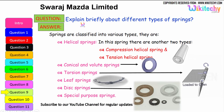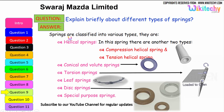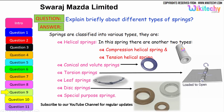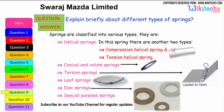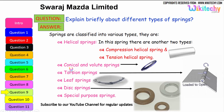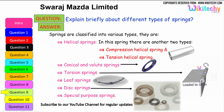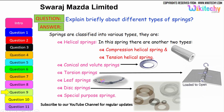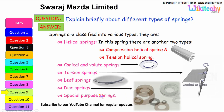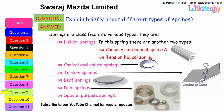Now let us see briefly the different types of springs. Springs are classified into various types: the first is helical springs, which are further divided into compression helical springs and tension helical springs. Next are conical volume springs, torsion springs, leaf springs, and disc springs. Additionally, there are special purpose springs. These are the different types of springs available.